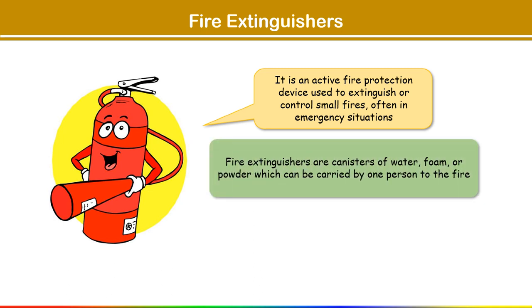Fire extinguishers consist of water, foams, or powder which can be carried to the fire. It typically consists of a cylindrical pressure vessel containing an extinguishing agent under pressure.